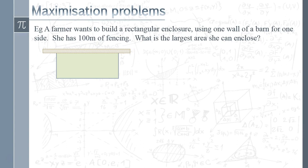First example: we've got a question in context where a farmer wants to build a rectangular enclosure. One wall has already been used as the wall of the barn, so we've got to create the other three sides of this rectangular enclosure. The question is: what's the largest area that she can enclose? That's the maximization element to it.